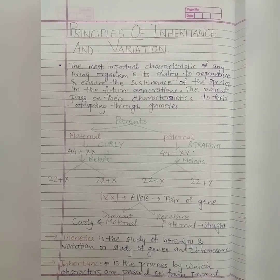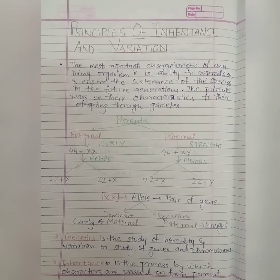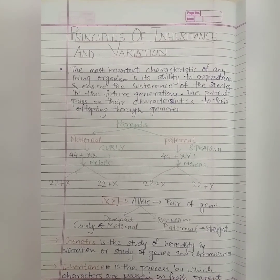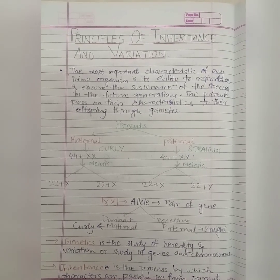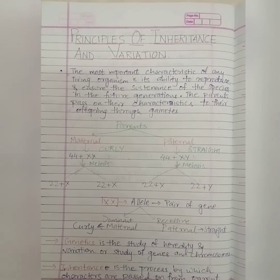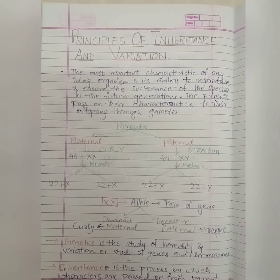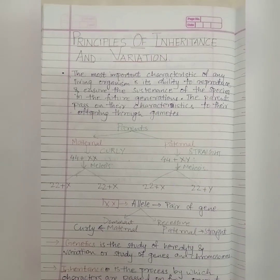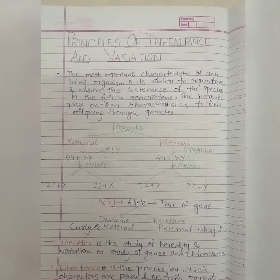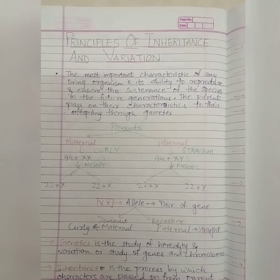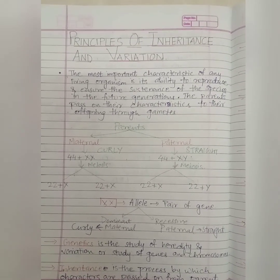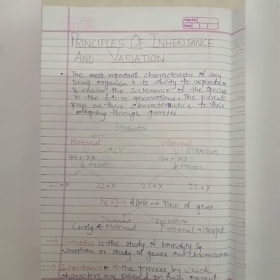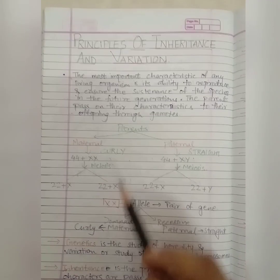To understand the principle of inheritance and variation: the most important characteristic of any living organism is its ability to reproduce and ensure sustenance of the species in future generations. The parents pass on their characteristics to offspring through gametes.